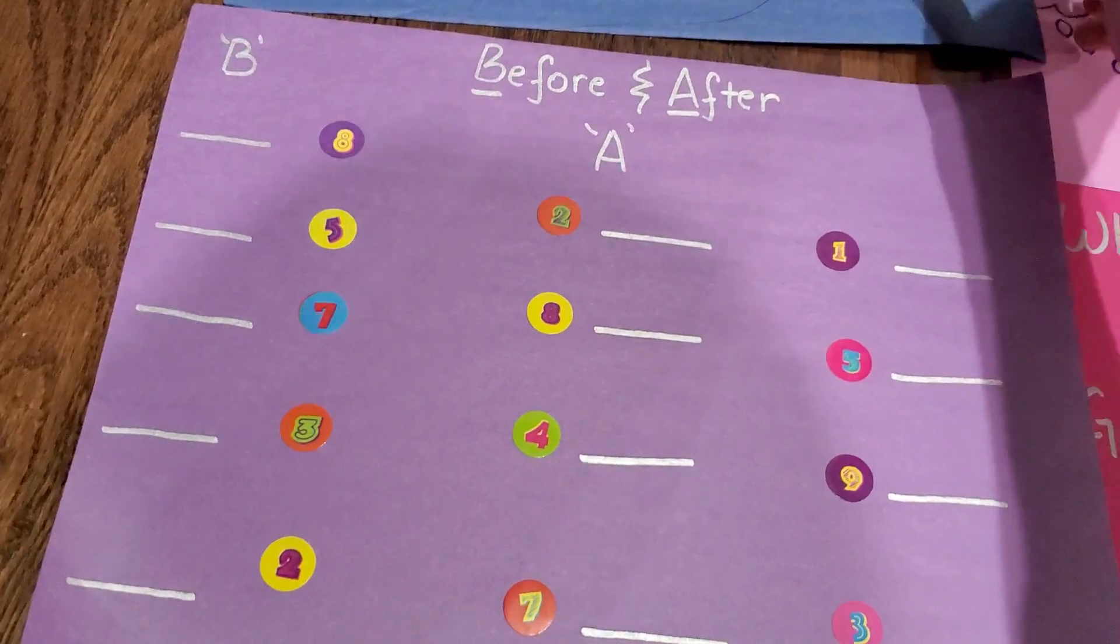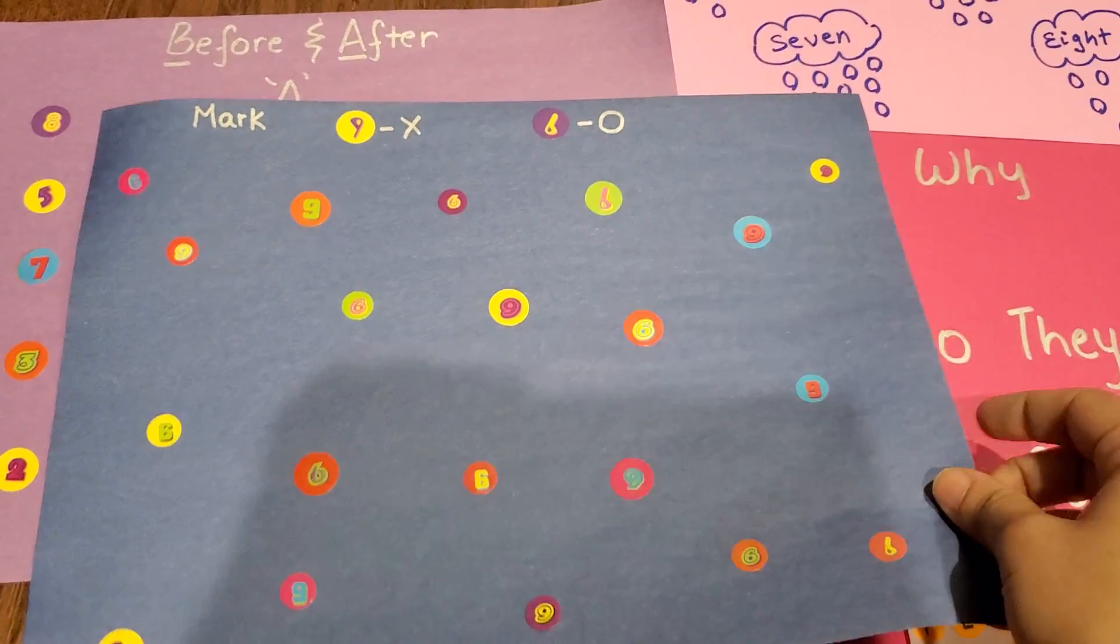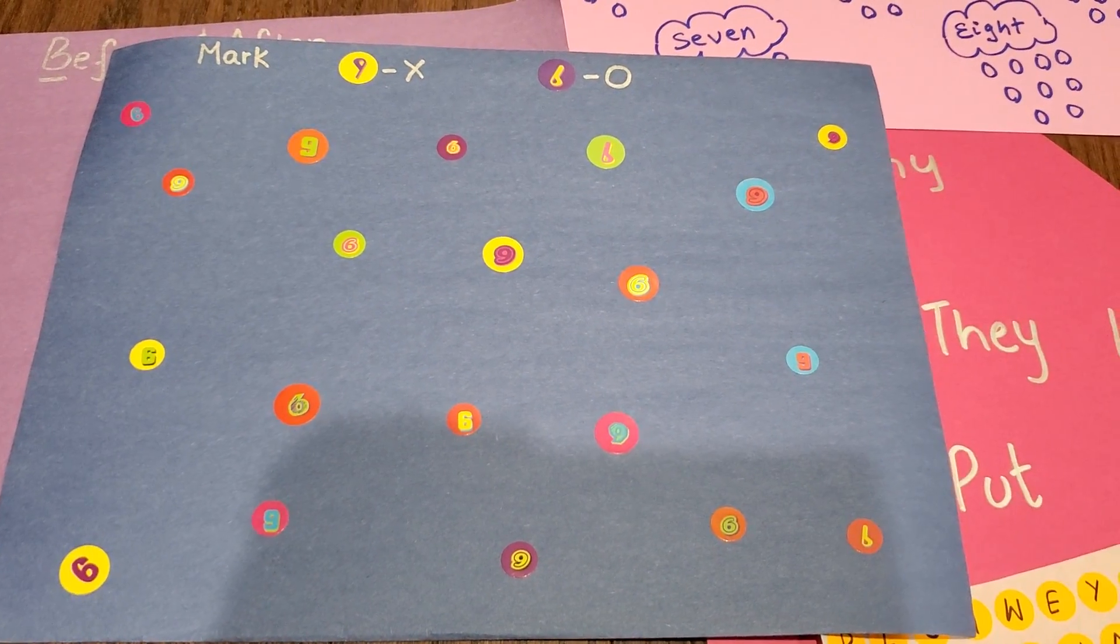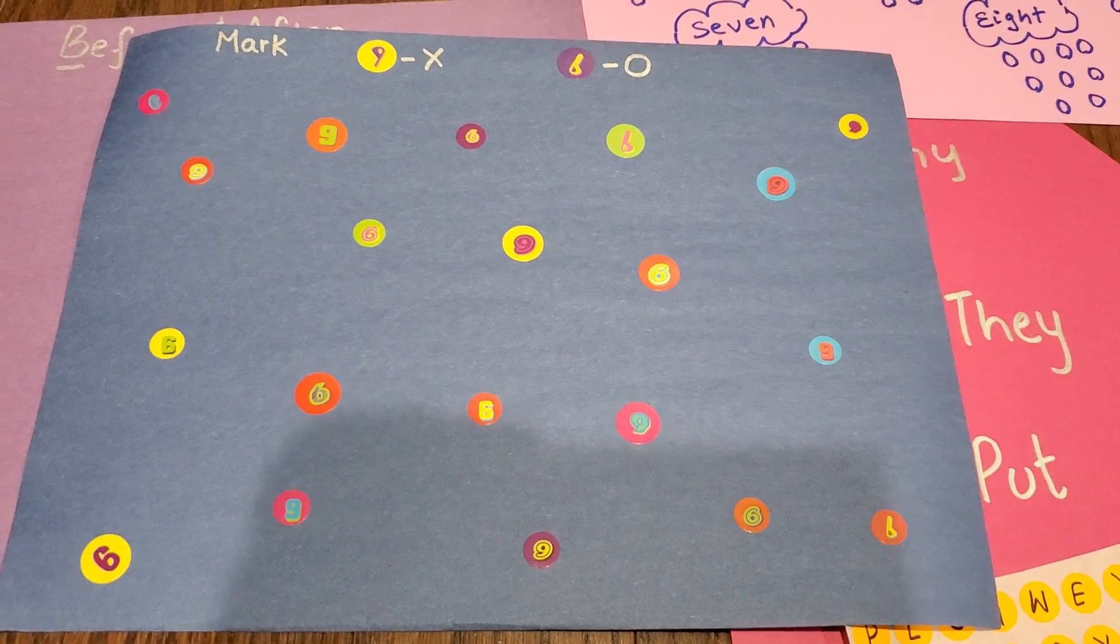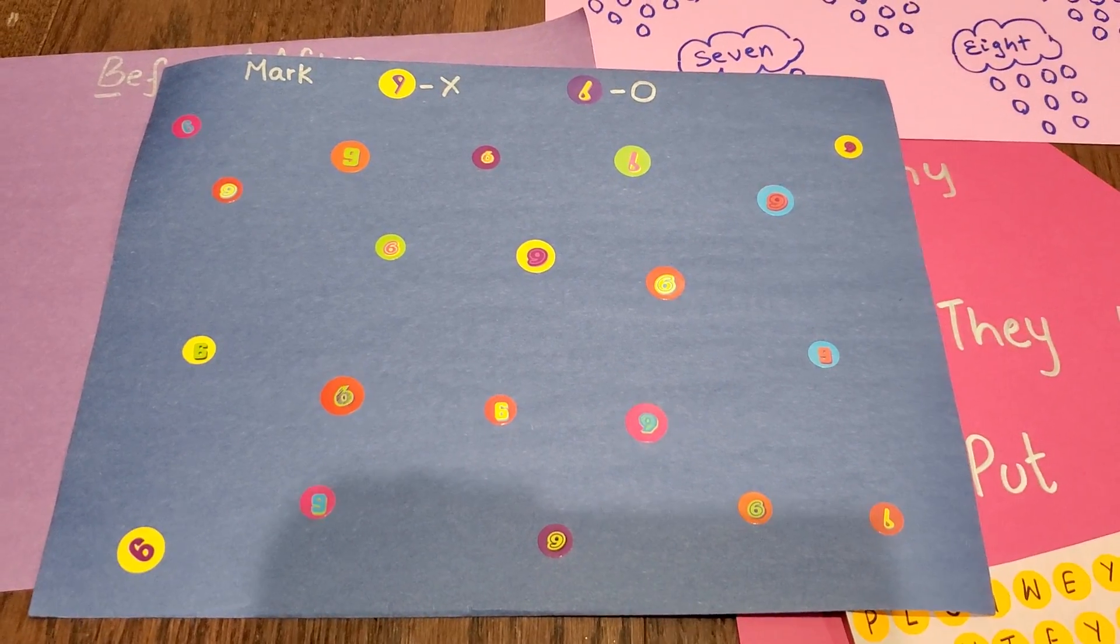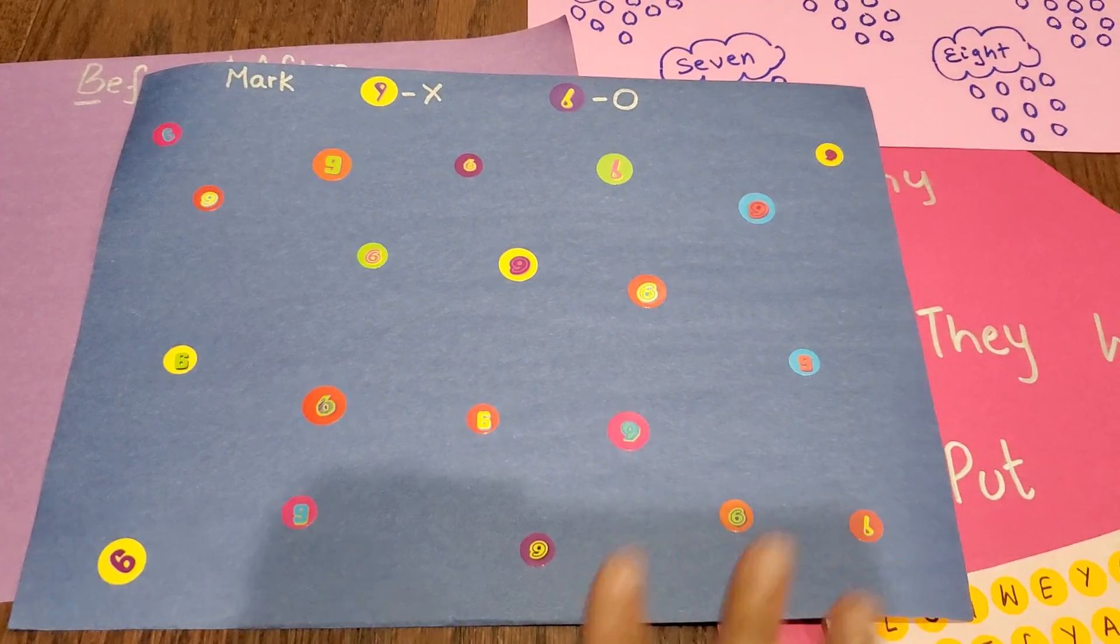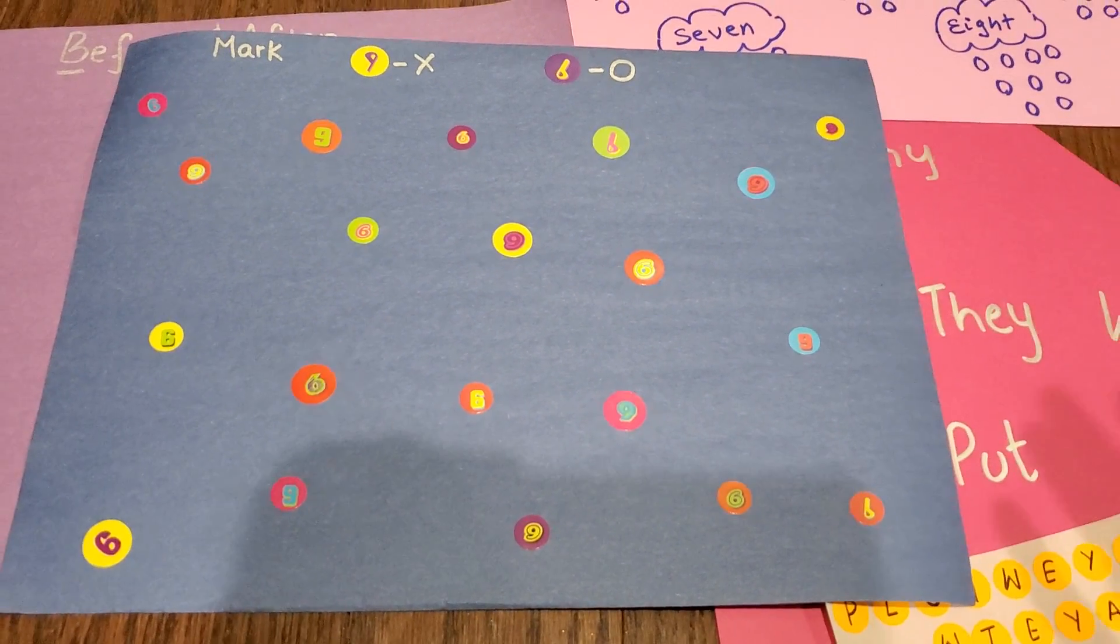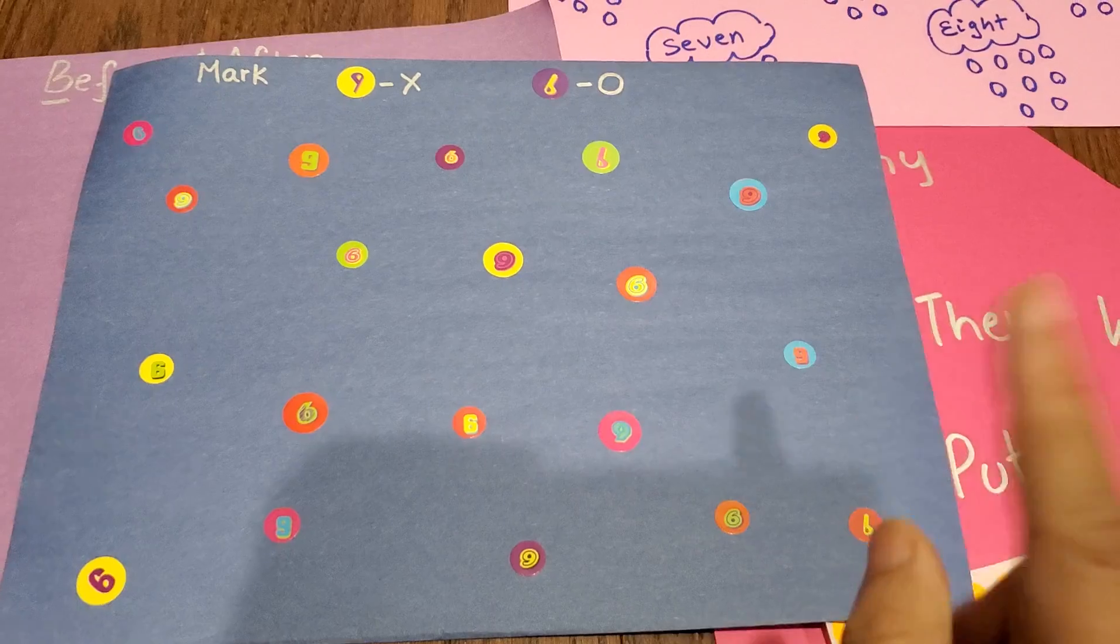The last activity I'm going to show you is something that Vivan used to really enjoy when he was a baby. I missed making all these activities for Vivan. It's like 'Mark 9 with an X and 6 with an O.' You can see there's so many of them that it's going to take some time. You can make it more dense or more easy. If you don't have stickers, just use simple pens, but use different color pens for each one so it becomes more challenging and more interesting. In front of every 9, he needs to write an X, and in front of every 6, he needs to make an O.